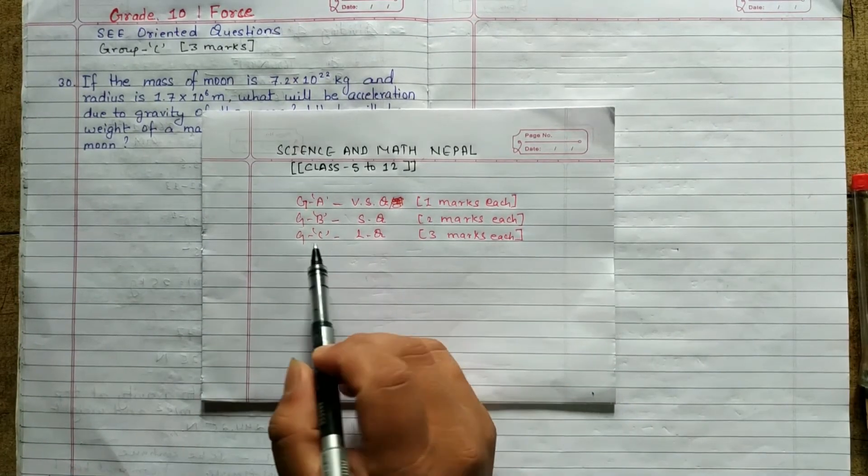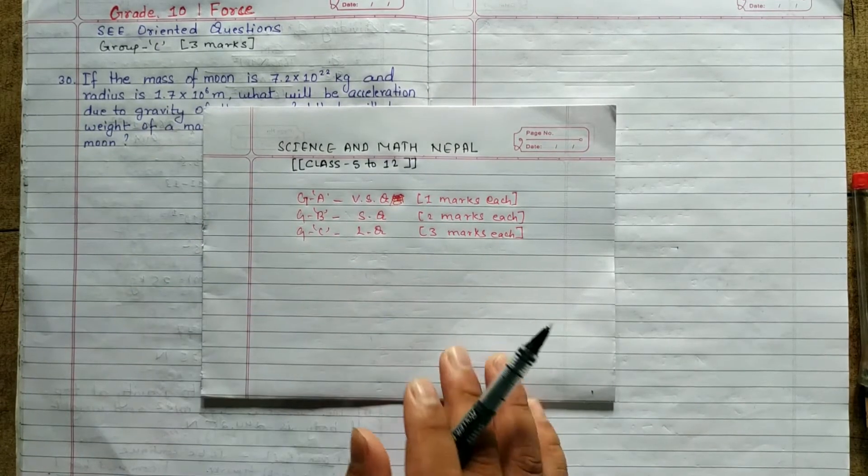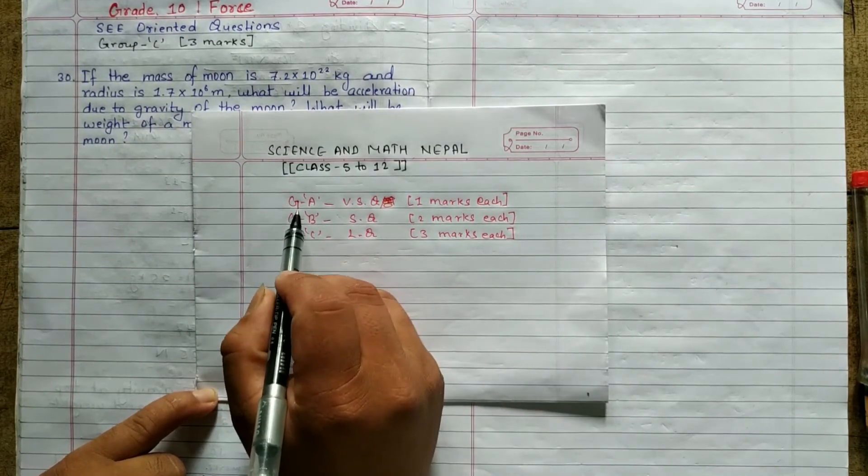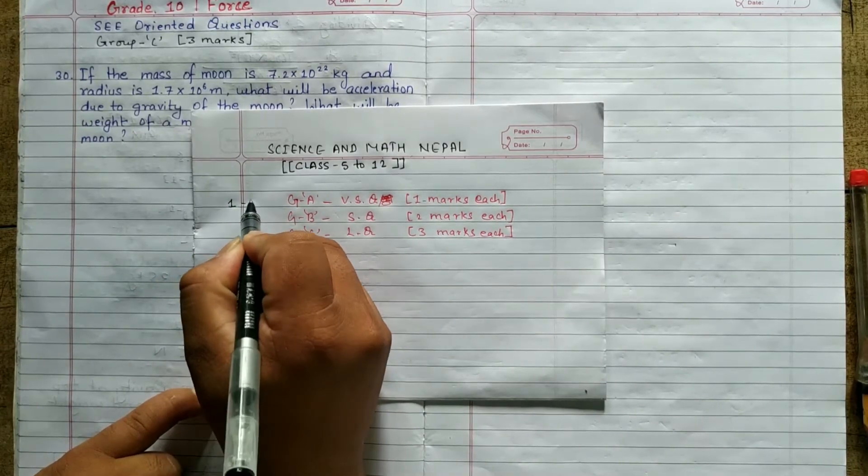Now, if we have group C, we will solve this problem. This is the problem. Group A is very short question, 1 mark each, 10 to class 1, 10 to class.